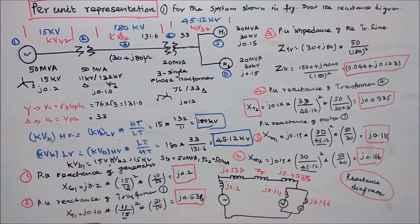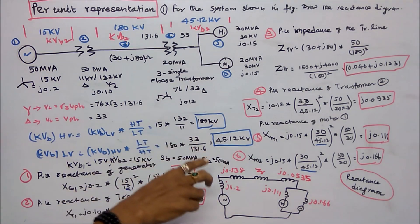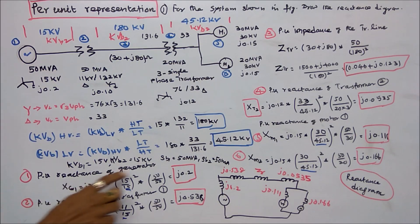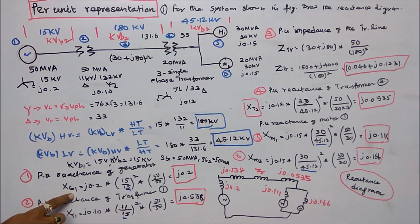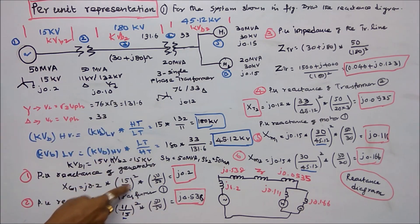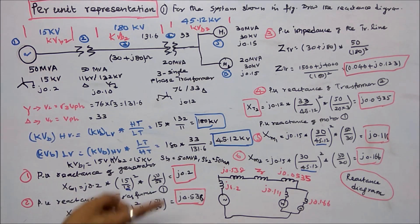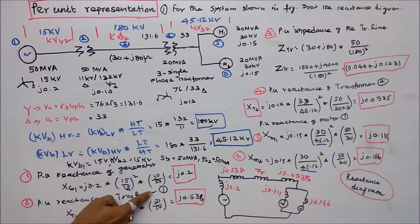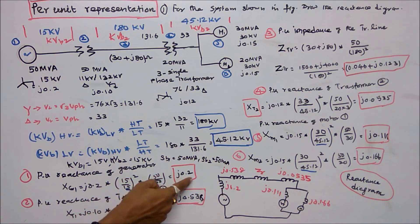Chosen value is 15 kV and SB2 is 50 MVA. First, find the per unit reactance of the generator. SG1 equals actual given reactance J0.2 into (VB1/VB2) squared, which is (15/15) squared, times SB2/SB1, which is 50/50. That equals J0.2 per unit.